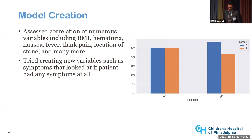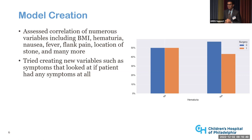We also tried creating new variables, such as a symptoms variable indicating if a patient had any symptoms. We knew stone size would be a big predictor, so we created a new variable called orthogonal measurement product, which multiplied the stone axial, horizontal, and vertical length. We found this variable worked better in our models than axial, horizontal, or vertical distance individually — it was a better predictor than each individually or both together.